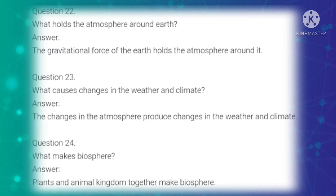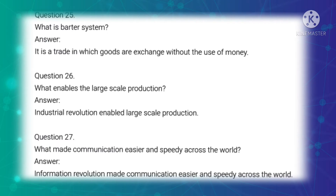Twenty-second question: What holds the atmosphere around earth? Answer: The gravitational force of earth holds the atmosphere around it. Twenty-fourth question: What makes biosphere? Answer: Plants and animal kingdom together make biosphere. Twenty-fifth question: What is barter system? Answer: It is a trade in which goods are exchanged without the use of money.